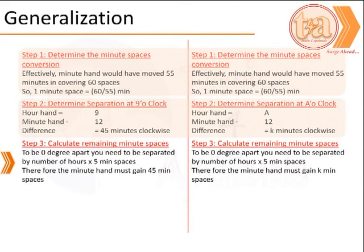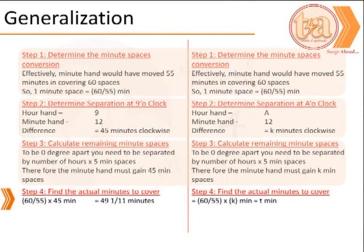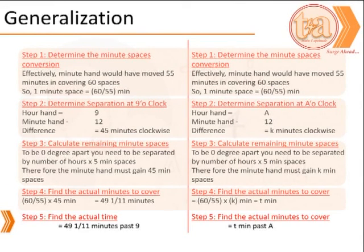For the two hands to coincide, the degrees separating each of them should be 0. We find the minute space separating them — that is k minutes in the clockwise direction. We convert k minutes into equivalent minute spaces by multiplying by 60/55; let us call that t minutes. To finish the problem, we adjust it to the starting point — t minutes past A o'clock is the actual answer.